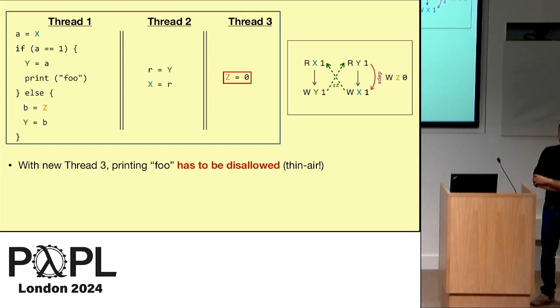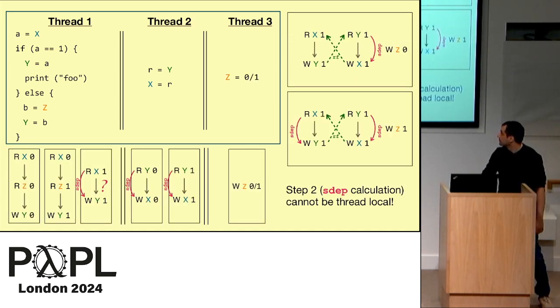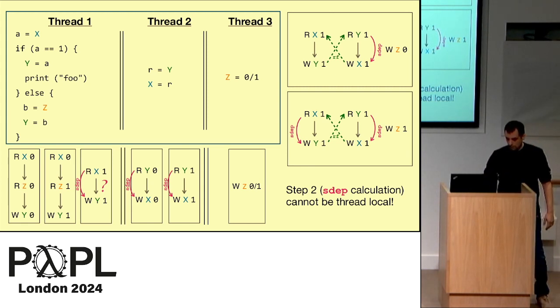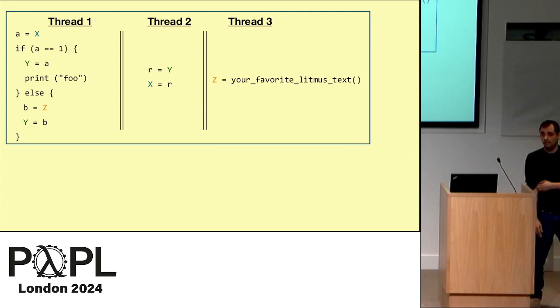But the problem is, if we change now thread number three to Z is zero, now with this one, foo cannot be printed, because printing foo means that you read one, but one is nowhere in the program. In the program, this is a clear case of thin air, out of thin air value that you can read. So if Z is zero in the third thread, then you should not be able to print foo. So in this case, we must have a semantic dependency. So the conclusion, the first conclusion, I think, is that the SDEP calculation, the ideal calculation that we didn't define, we already understand, if we accept my assumption so far, that it cannot be thread local. You have to look at what happens in another thread in order to know if I have a semantic dependency or not.